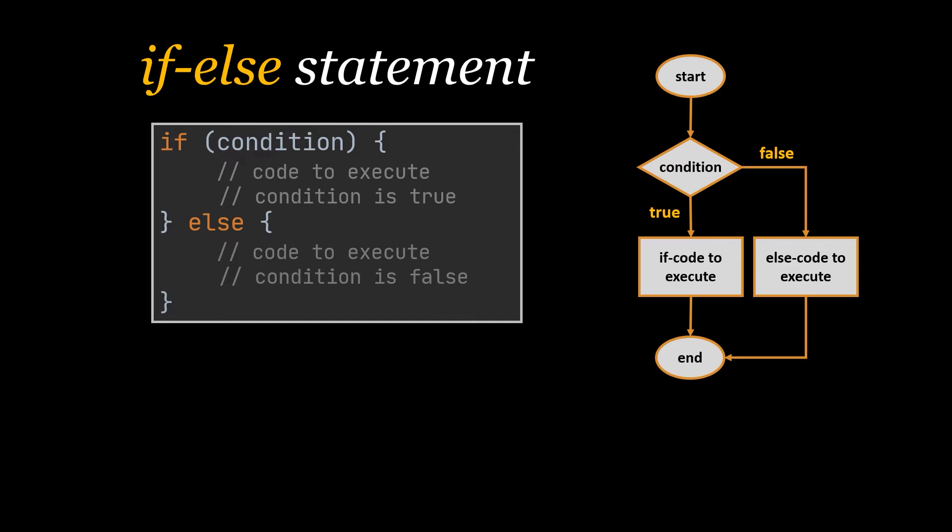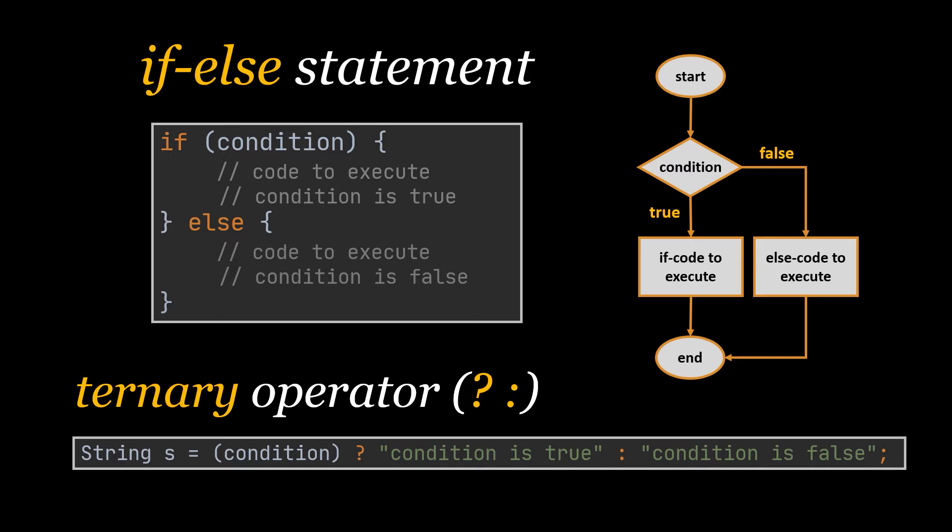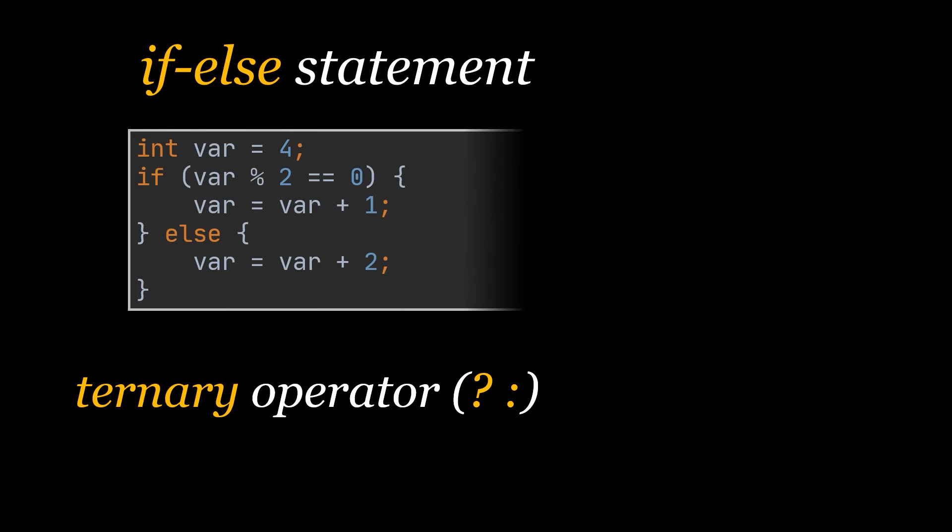We can also use the ternary operator to perform the task of an if-else statement. It is a shorthand way to check the condition. If the condition is true, the result of the question mark is returned, but if the condition is false, the result of the colon is returned. As you can see in this example, we are checking if the variable we have is even or odd.